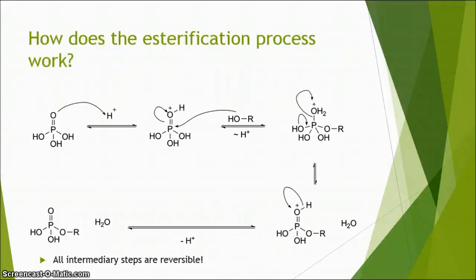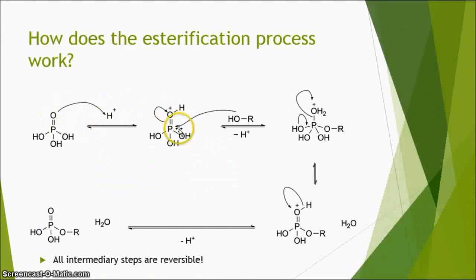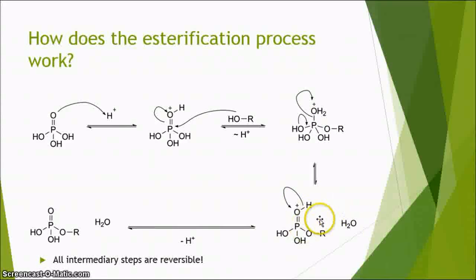Let's have a look at the mechanism of ester formation. The formation of esters in a laboratory can be achieved by mixing an acid and an alcohol under acidic conditions, generated by addition of a strong inorganic acid like sulfuric acid. This example shows the reaction between phosphoric acid and an alcohol. In the first step, the oxygen that is double bonded to the phosphorus is protonated. This renders the attached phosphorus more electrophilic and facilitates the attack of the nucleophile — in our case the alcohol. The next step is a proton transfer in the pentavalent intermediate, after which water is eliminated to give the protonated species.